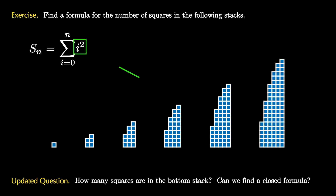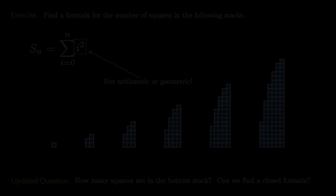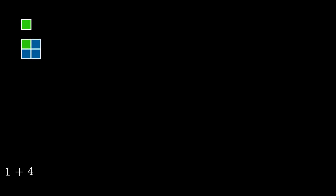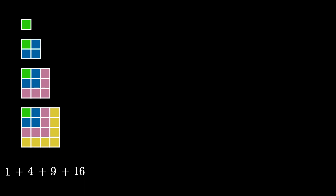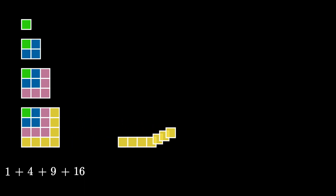Unfortunately, we can't use the techniques we've seen before, because i squared is neither arithmetic nor geometric. One way to find such a sum is to try to find an appropriate visual representation. Let's use the stacks of squares as a visualization for the sum of the first n squares, and for our purposes we'll just use the case n equals 4.